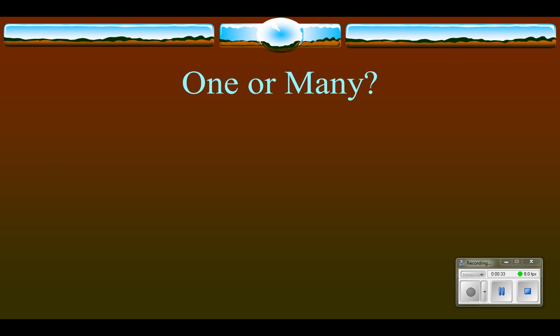Let's get a couple of other terms: monoprotic and polyprotic. Mono means one, and protic in this case refers to protons. A hydrogen ion is a hydrogen atom that has lost its electron, so it's just a proton. Monoprotic means one hydrogen ion, and polyprotic means many hydrogen ions.